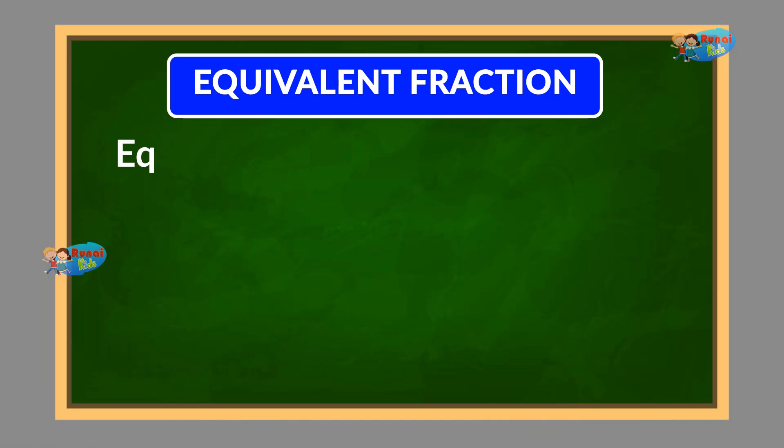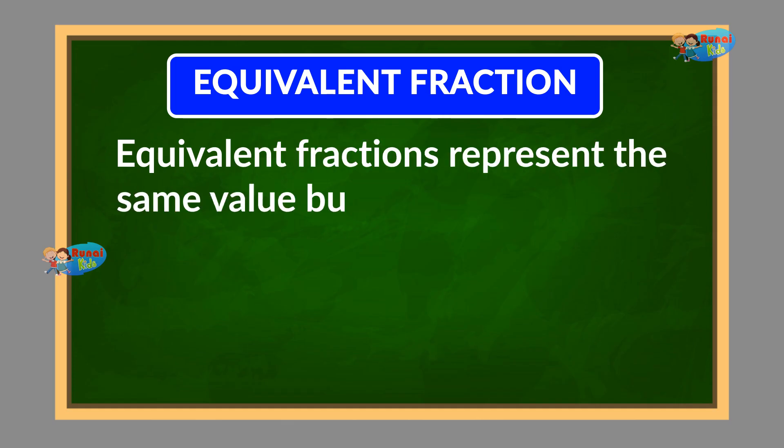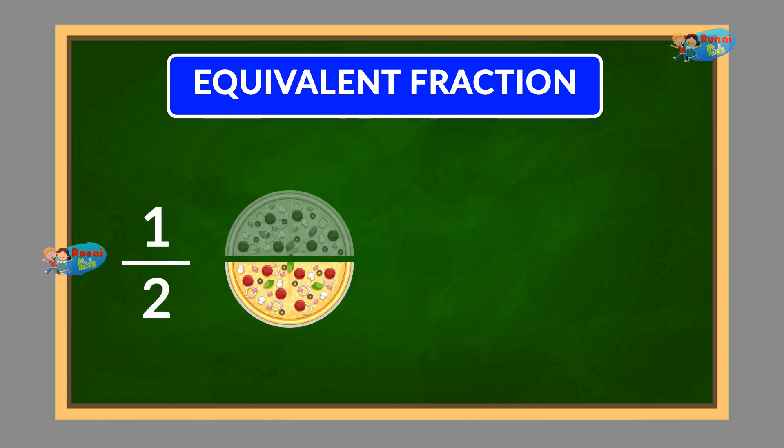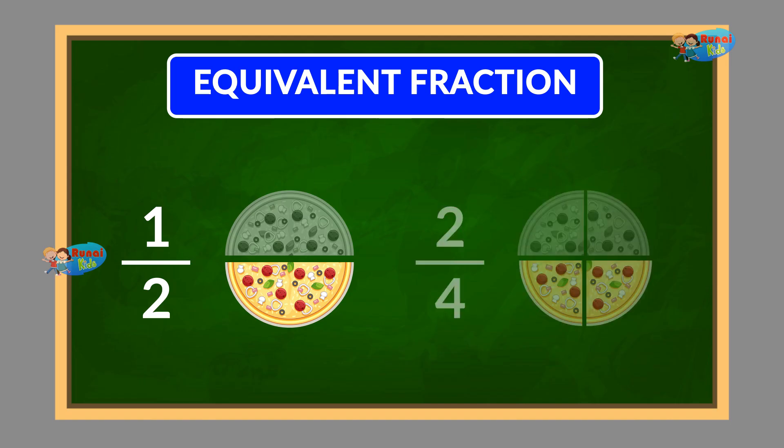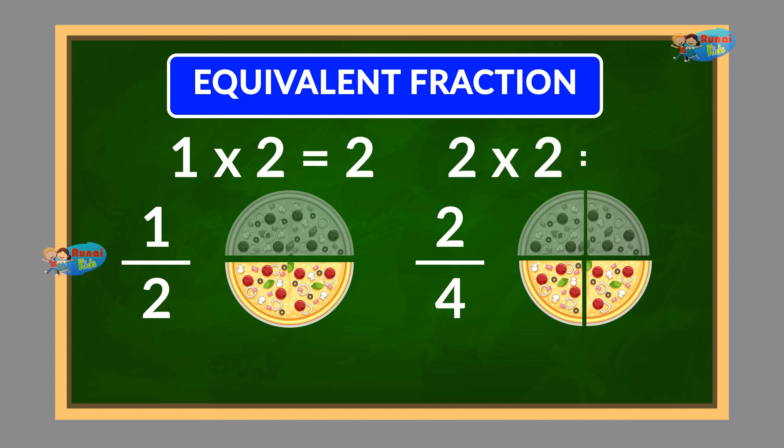Equivalent fractions represent the same value but look different, like 1 by 2 and 2 by 4. You can get equivalent fractions by multiplying or dividing both the numerator and denominator by the same number. For example, 1 by 2 equals 2 by 4 because 1 into 2 equals 2 and 2 into 2 equals 4.